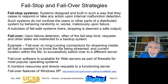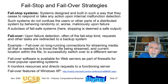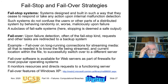Fail stop systems are designed so that they cease to respond or take any action upon internal malfunction detection. This is essentially an instance of fail safe systems. If a fail stop system stops, it provides no data, so it won't be using incorrect data or taking incorrect actions when something goes wrong. It's good to design systems to shut down and stop when something goes wrong — these form a subclass of fail safe systems.